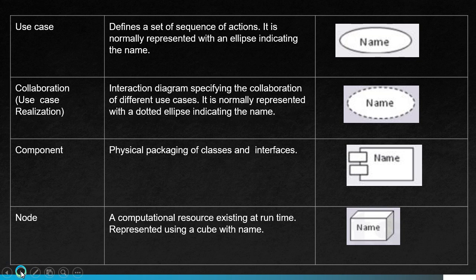The next element is use case — it defines a set or sequence of actions, normally represented with an ellipse indicating the name. The next element is collaboration — an interaction diagram specifying the collaboration of different use cases, represented with a dotted ellipse indicating the name. The next element is component — the physical packaging of classes and interfaces in a UML model.